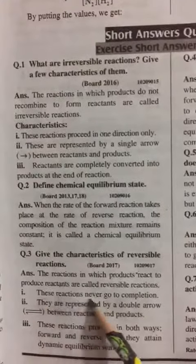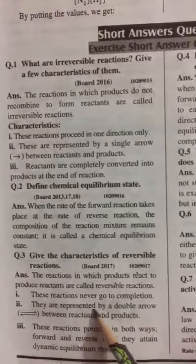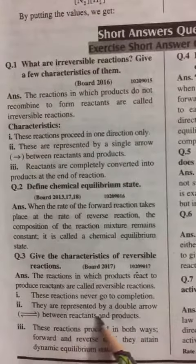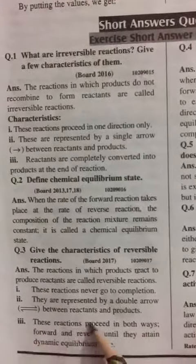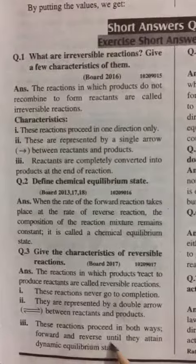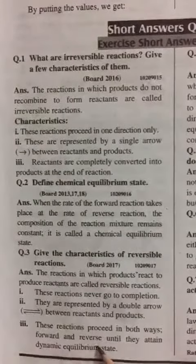First, these reactions never go to completion. Two, they are represented by a double arrow between the reactants and products. Three, these reactions proceed in both ways, forward and reverse, until they attain dynamic equilibrium state.